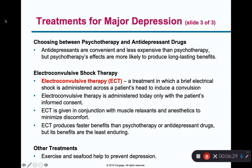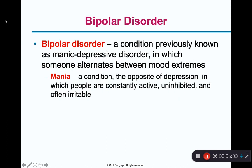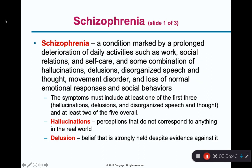Bipolar disorder is the chronic mood swings that go on for a long period of time — the cycle of depression to mania. That's just a continuous cycle that goes on.